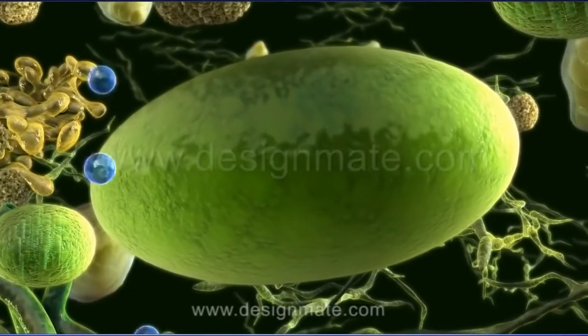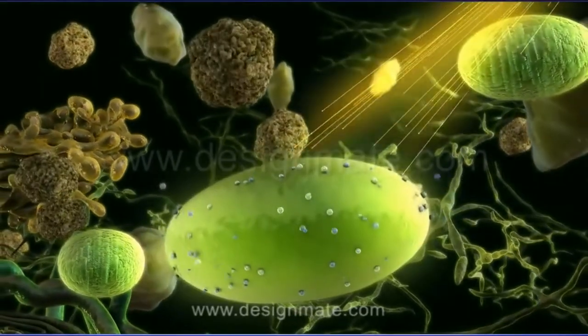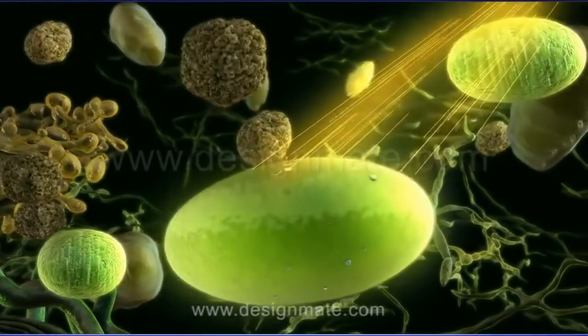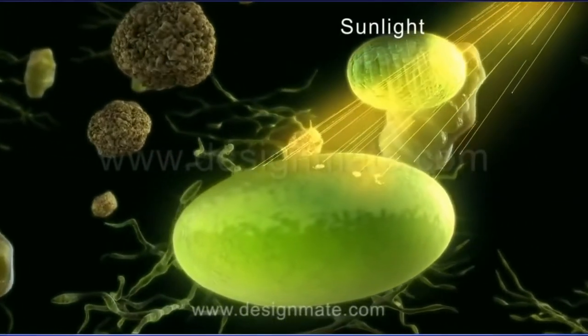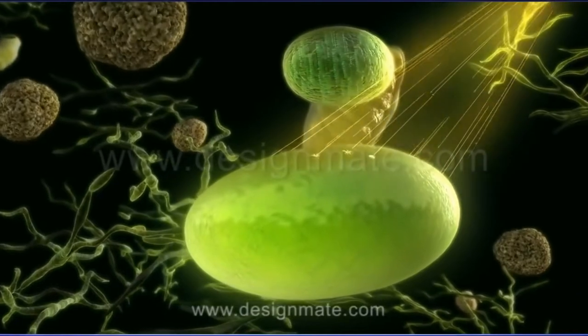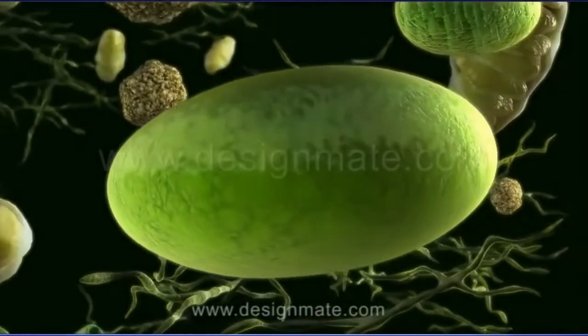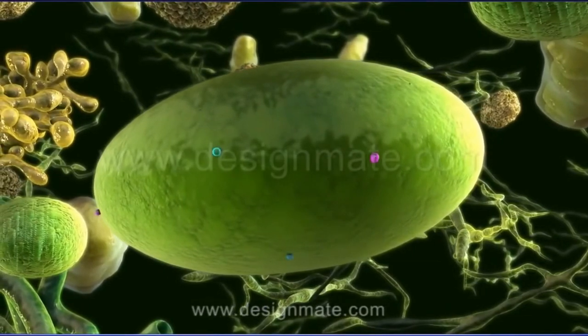These chloroplasts also have the capacity for trapping energy from sunlight. This energy is used to synthesize glucose and oxygen from carbon dioxide and water. These oxygen and glucose molecules diffuse out of the chloroplasts.